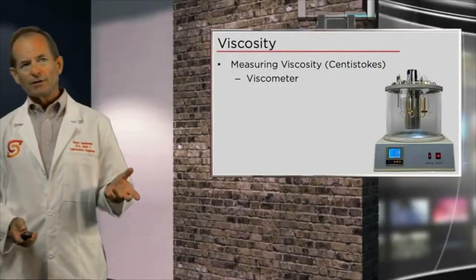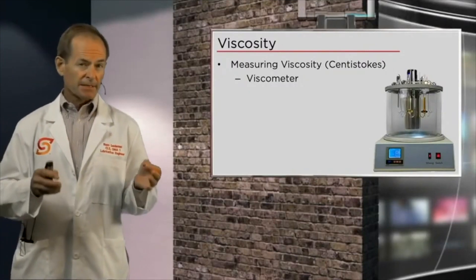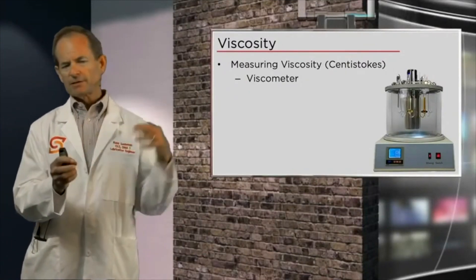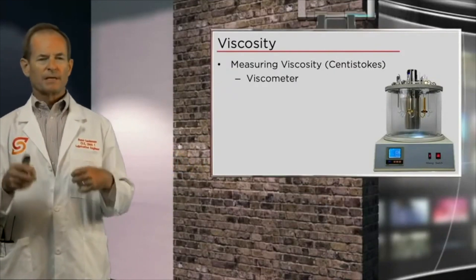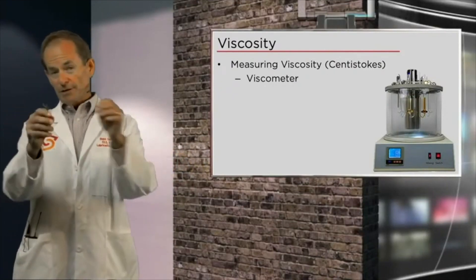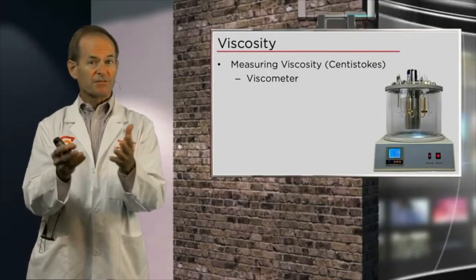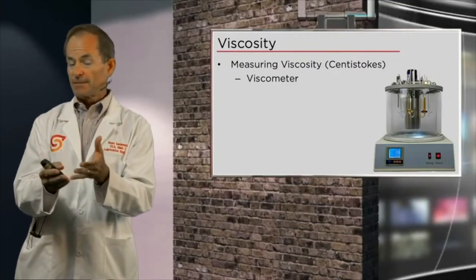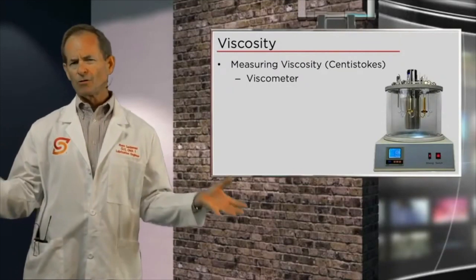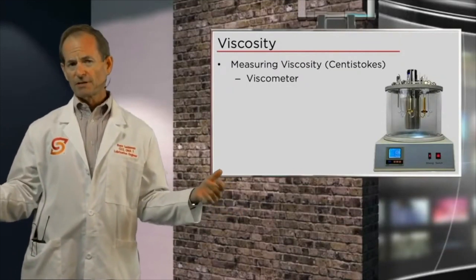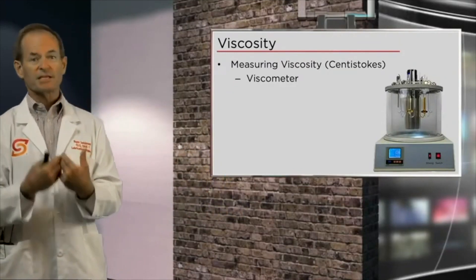We take that timing — that number of seconds — and take a certain calibration code from the J-tube, plug it into another formula, and end up with a number that is the viscosity. The typical unit of viscosity measurement — and there are a whole bunch of scales — is the centistoke. Most of them are pegged back to this unit.